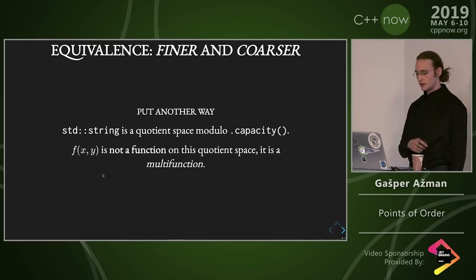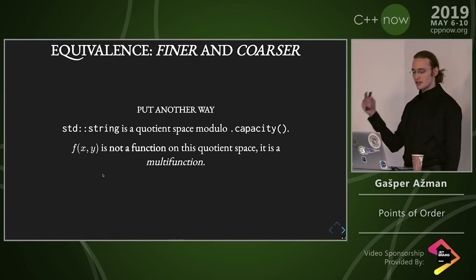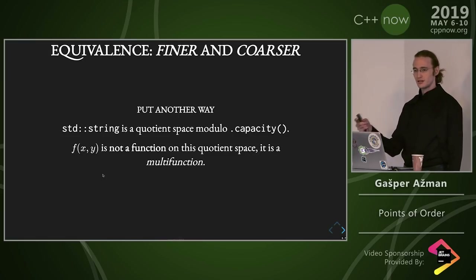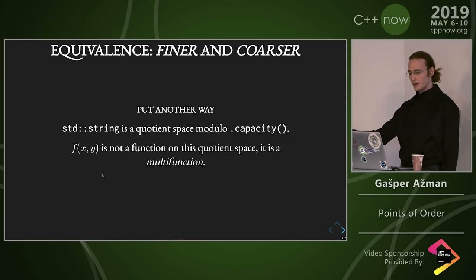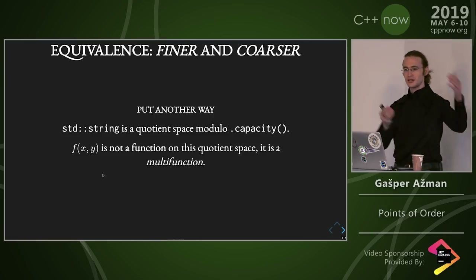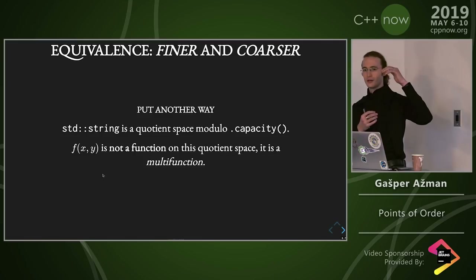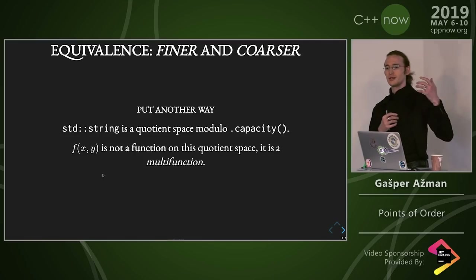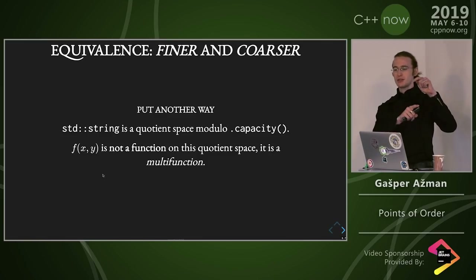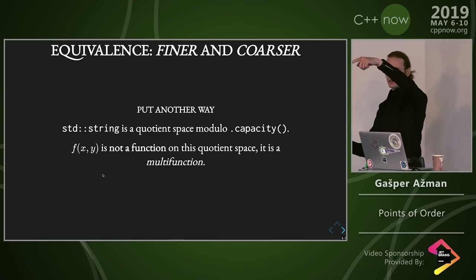Another way to put this: std::string is a quotient space modulo capacity. And f(x,y) — as in the EQ of x,y — is not a function on this quotient space; it's a multifunction. Because this equivalence class of empty strings, one of which has capacity one, actually maps with this function to two different things.